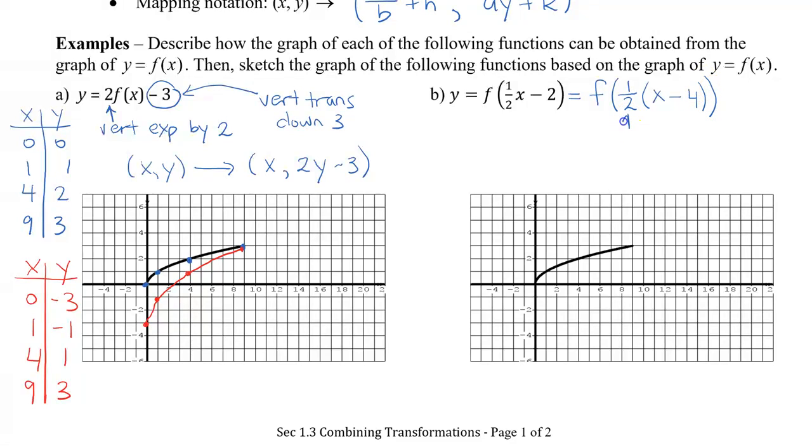Okay, so from here I can see that I have a horizontal expansion by two, because remember I have to take the reciprocal. And here I have a horizontal translation for right, or right for. So in terms of the mapping notation: